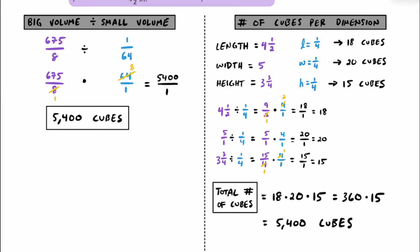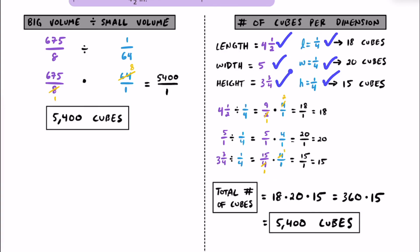Hopefully this makes sense because it matches what we got earlier — both of these methods give us 5,400 little unit cubes that fit inside of that right rectangular prism. Fundamentally, these strategies are quite similar: on the left side we figured out how much 3D space fits inside of 3D space and divided. On the right side, we found how much 1D space fits inside each of the 1D dimensions and multiplied those three together. Either way, you're seeing how many times something smaller fits into something that is bigger.